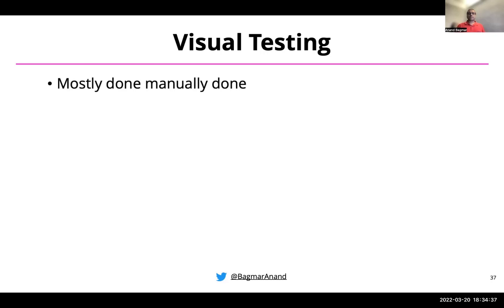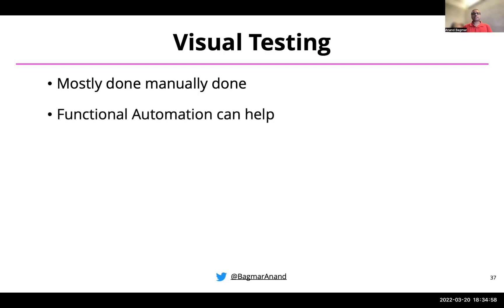Visual testing, as we've seen from those examples, is mostly done manually. You have to look at the way screens are rendered and take decisions. A human has to look at it, apply the context of the product and the test journey, and decide if what they're seeing is right or wrong. There is some aspect where functional automation can help, but only in a very limited way. And if visual testing is not done, depending on context, there can be business or revenue loss — as shown by the Amazon, UPS, Southwest, and banking examples.